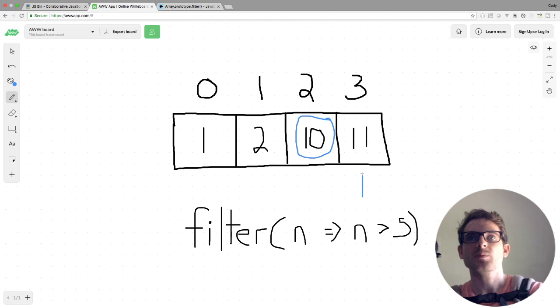And then finally, we're going to get to the last one, which is 11. Following the same process, is 11 greater than 5? It is, so we're going to keep track of that one too.